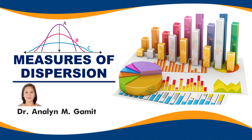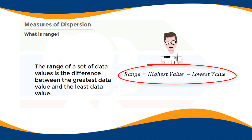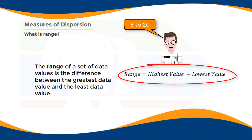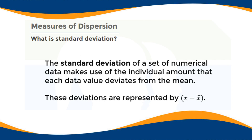There are three types of measures of dispersion: the range, the standard deviation, and the variance. The range of a set of data values is the difference between the greatest and the least data value — that is, range equals the highest value minus the lowest value. For example, if scores range from five to twenty, the range is twenty minus five, which is fifteen.